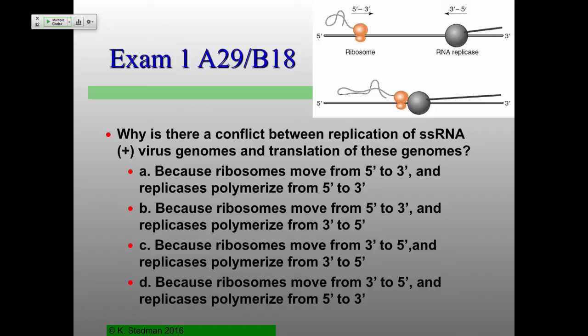The answer is A. The ribosome is moving from 5' to 3'. You can't say it's polymerizing because it's making amino acids — that has to be movement. The replicase, just like all polymerases ever discovered, extends from a 3' end — always going 5' to 3'. That includes DNA polymerases, RNA-dependent DNA polymerases, DNA-dependent DNA polymerases, RNA-dependent RNA polymerases — all of them go in that direction. Even poly-A polymerases.